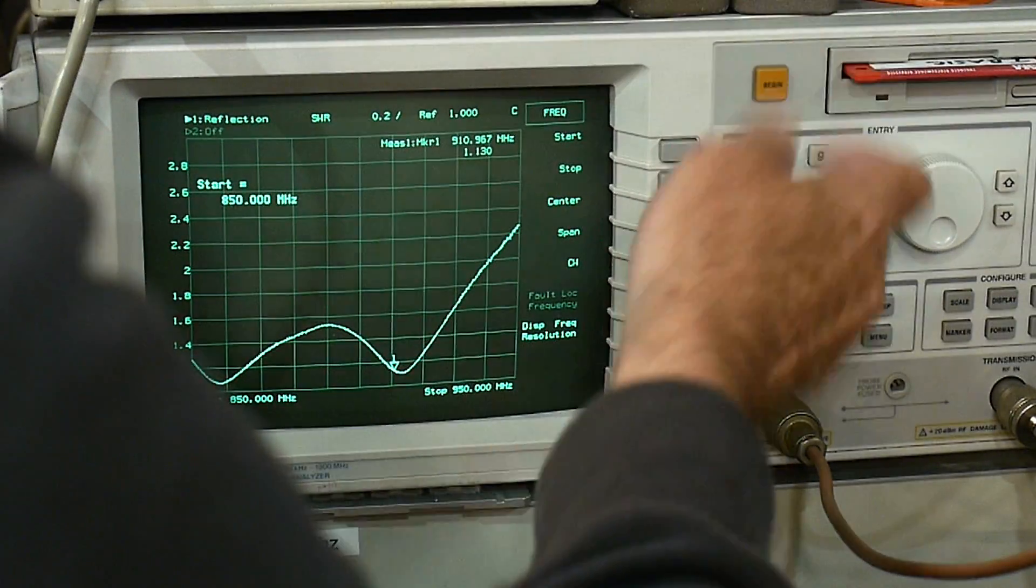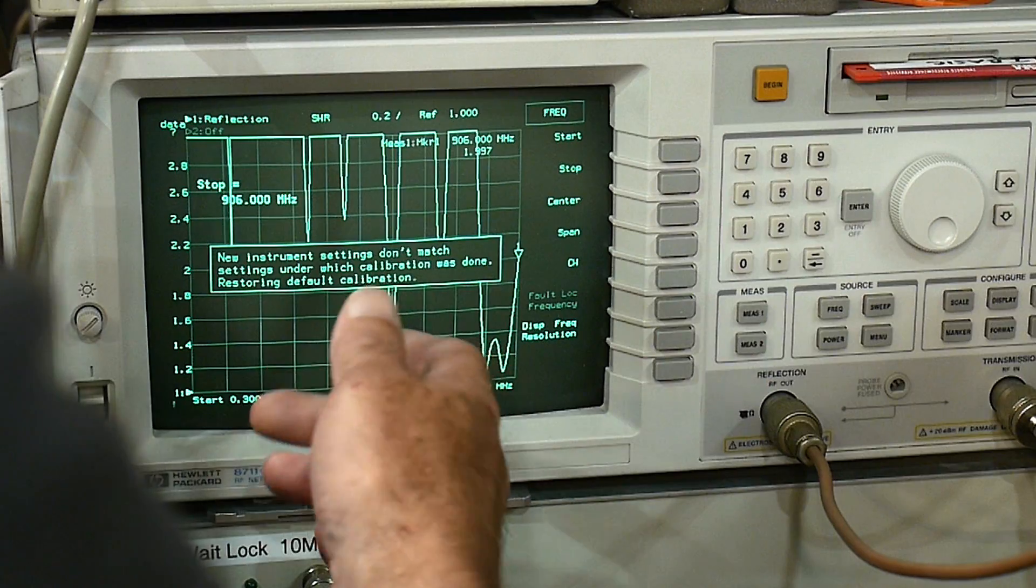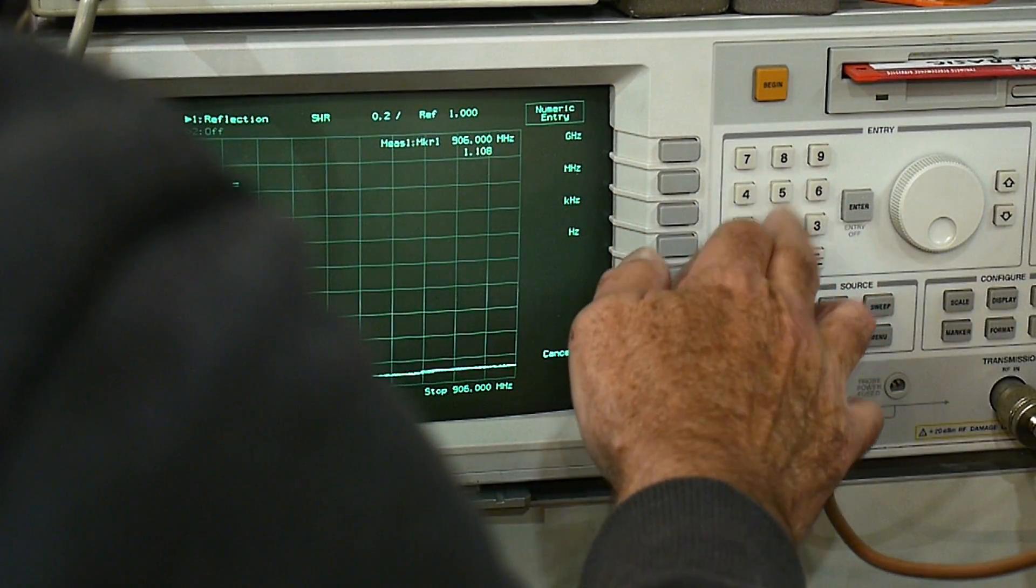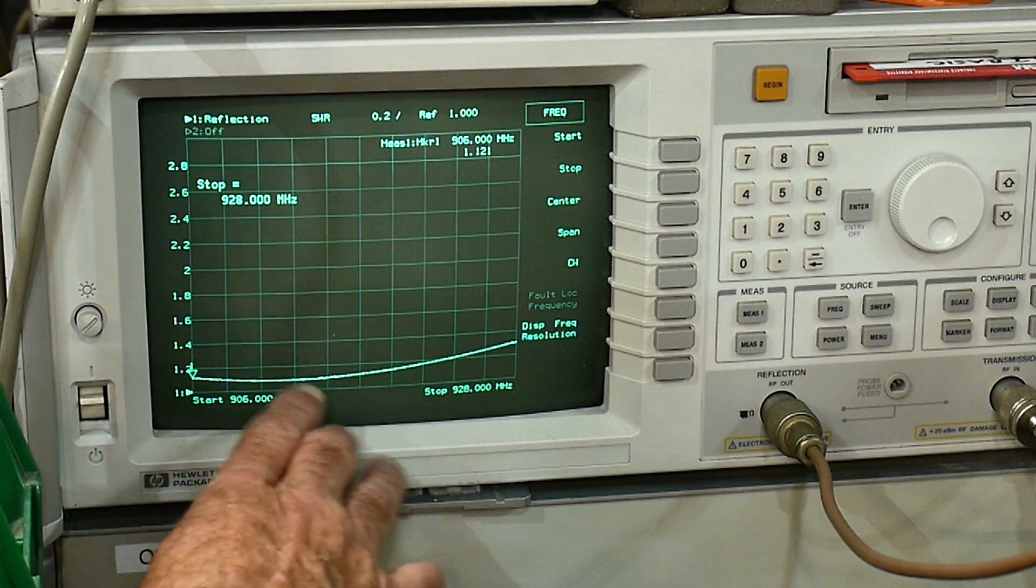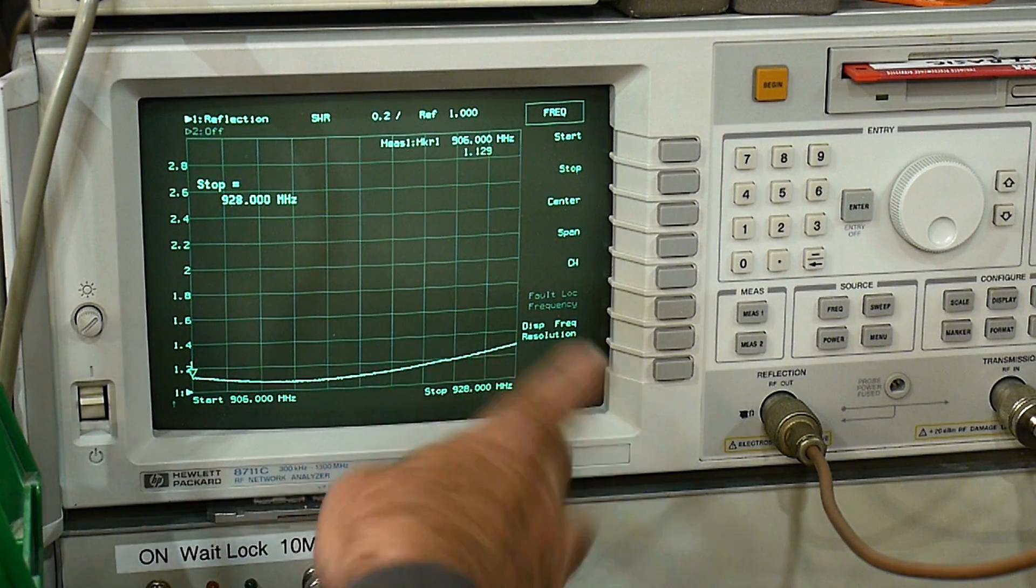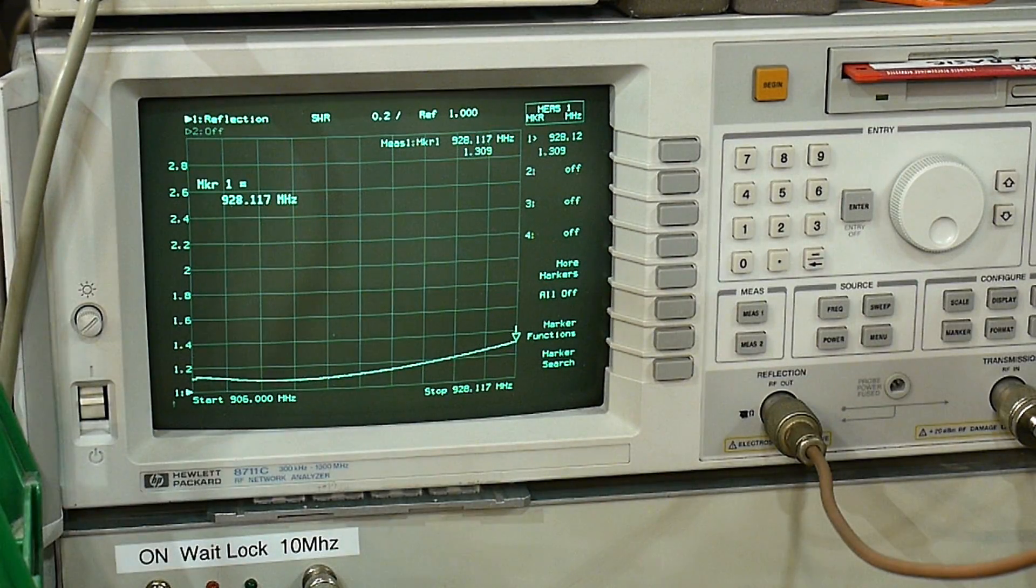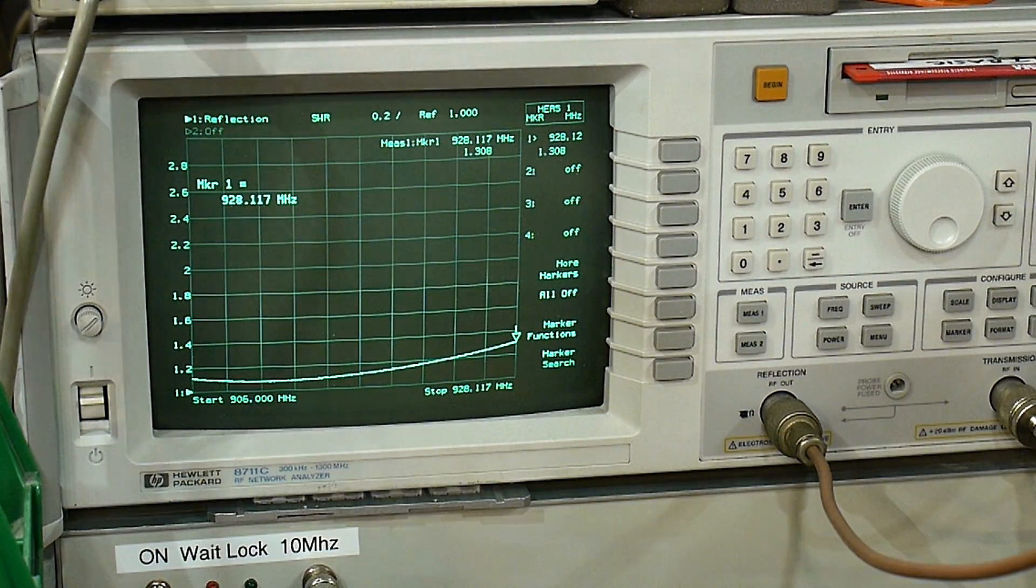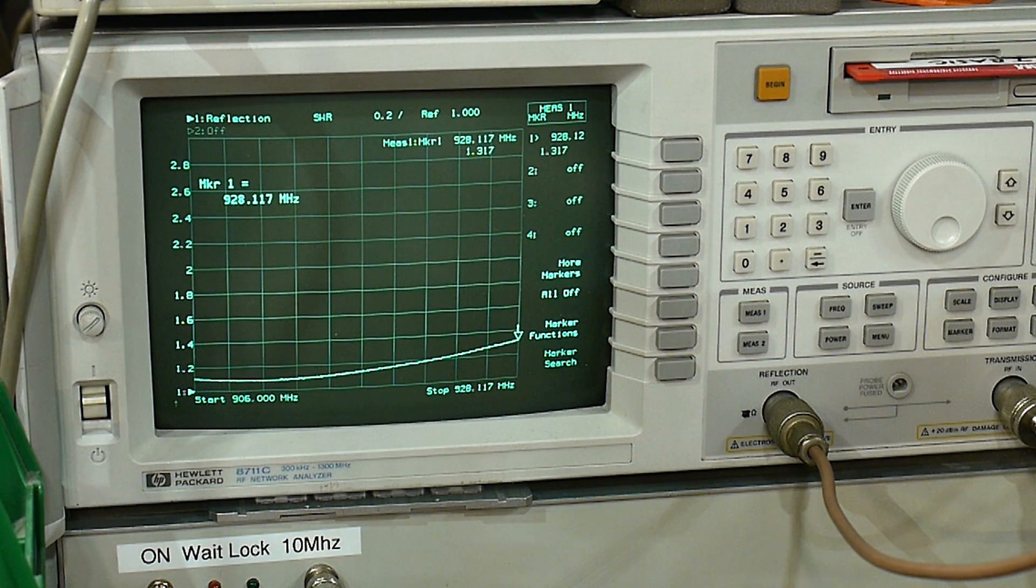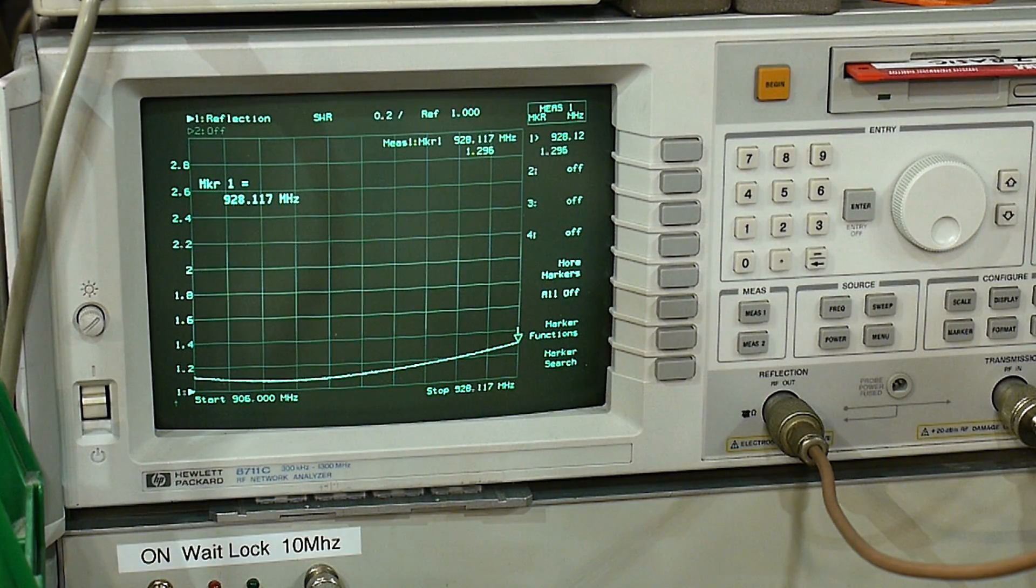Let's put the start to 906 megahertz and a stop of 928 megahertz. And there you go - this goes from 1.2, 1.13 up to about 1.3. So that's pretty good. I think it has very good VSWR over the intended range, so no issues there. Let's take a look at the construction and maybe open it up.